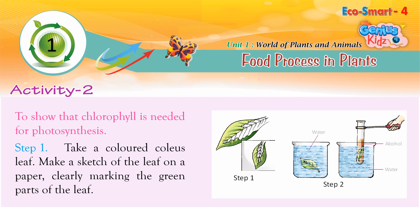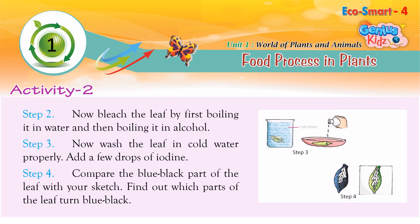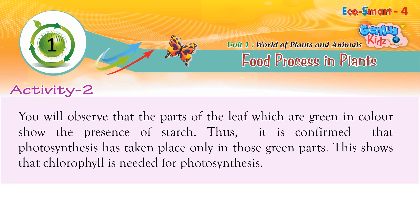Activity 2: To show that chlorophyll is needed for photosynthesis. Step 1: Take a colored coleus leaf and make a sketch of the leaf on paper, clearly marking the green parts. Step 2: Bleach the leaf by first boiling it in water and then in alcohol. Step 3: Wash the leaf in cold water and add a few drops of iodine. Step 4: Compare the blue-black parts of the leaf with your sketch to find which parts turn blue-black. You will observe that only the green parts show the presence of starch, confirming that photosynthesis has taken place only in those green parts. This shows that chlorophyll is needed for photosynthesis.